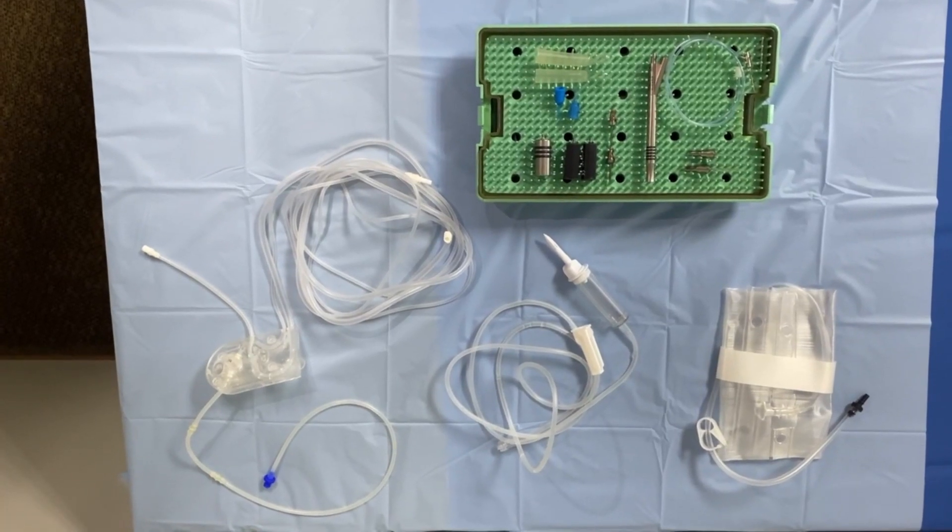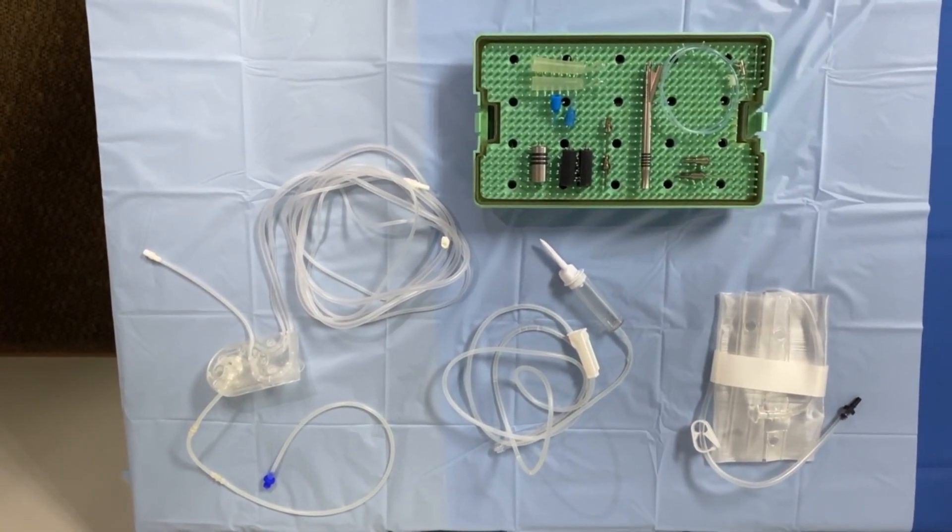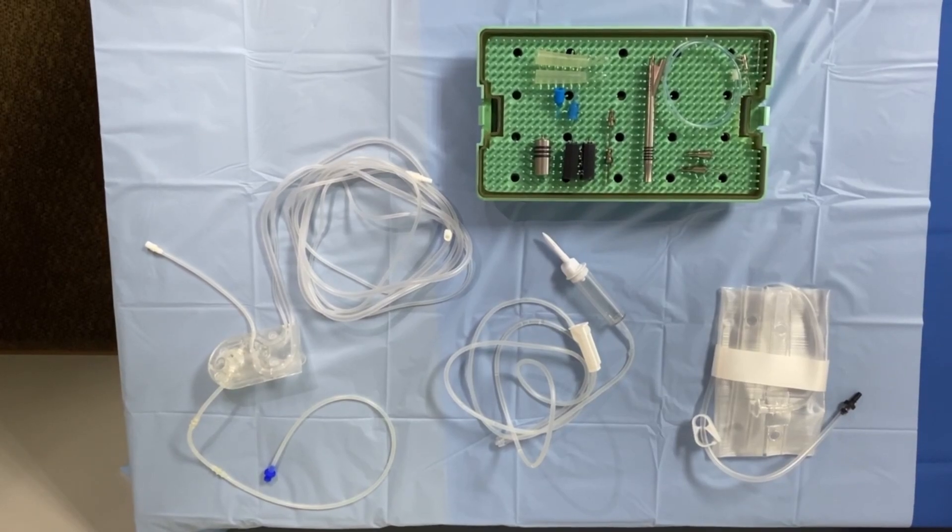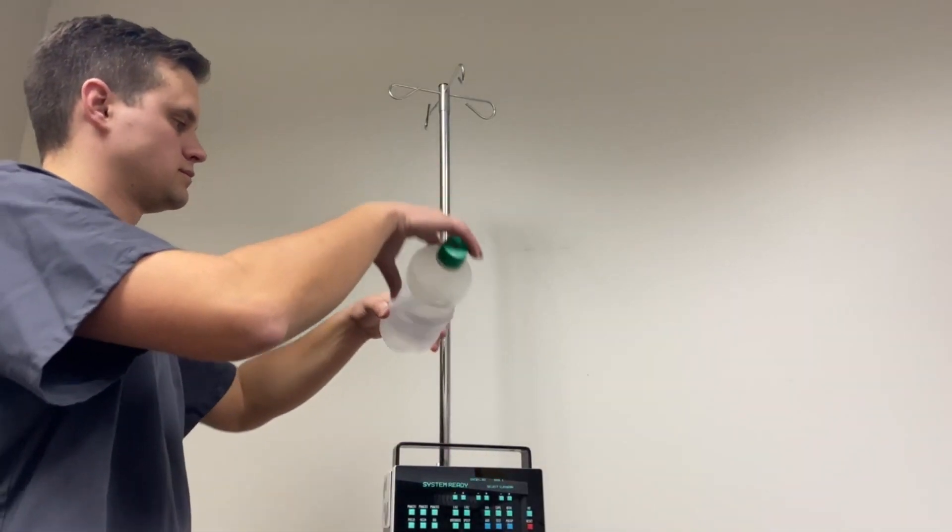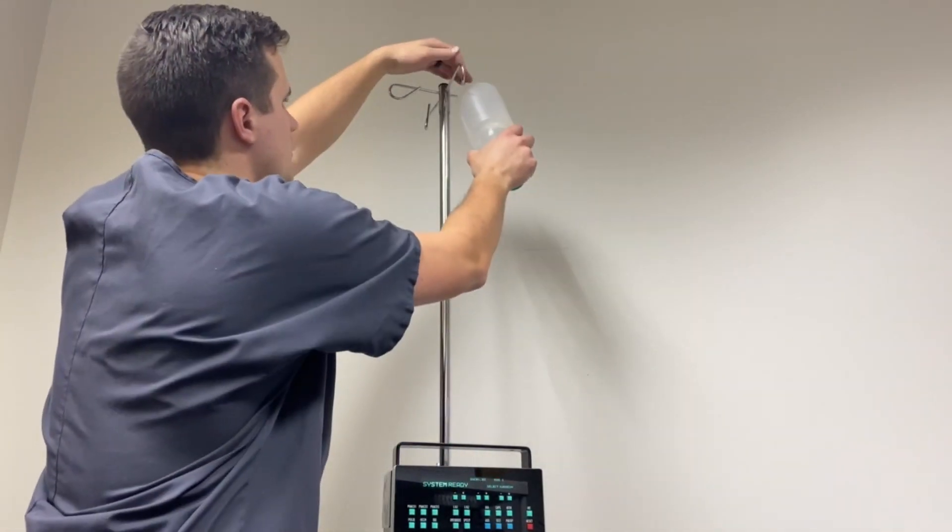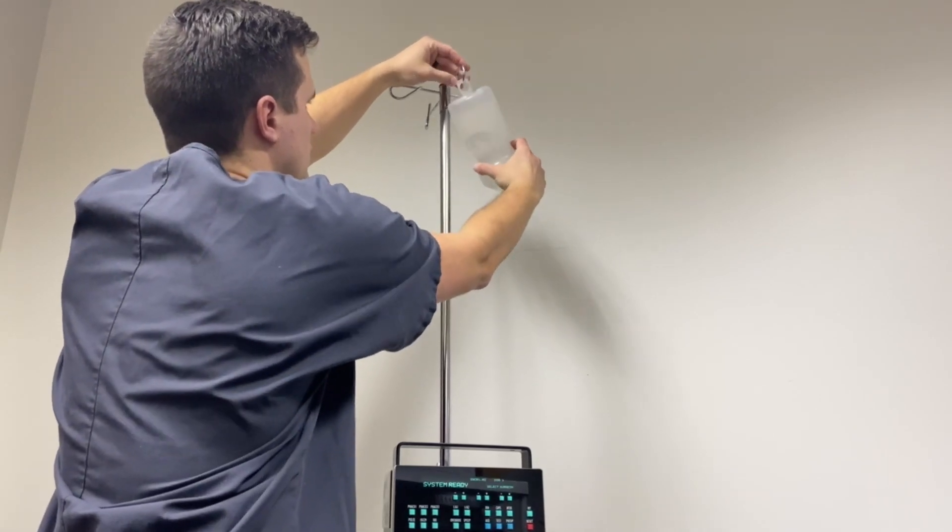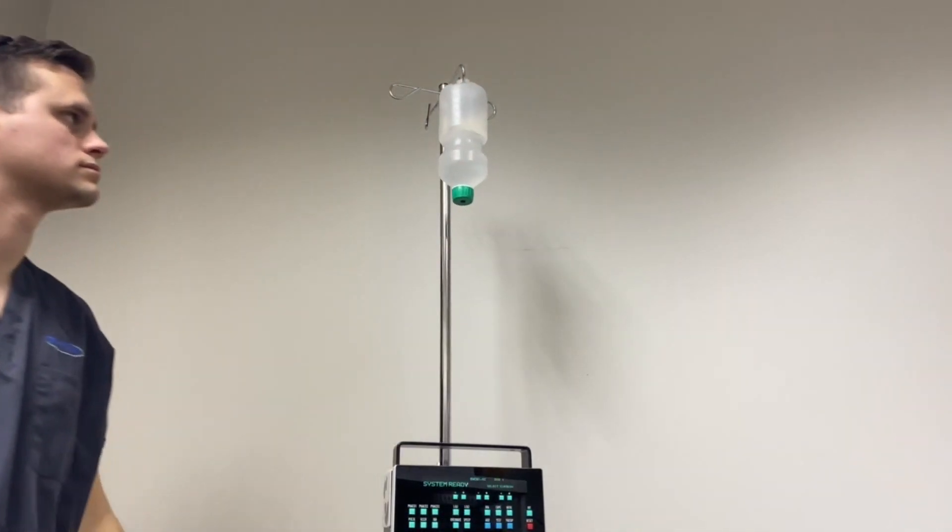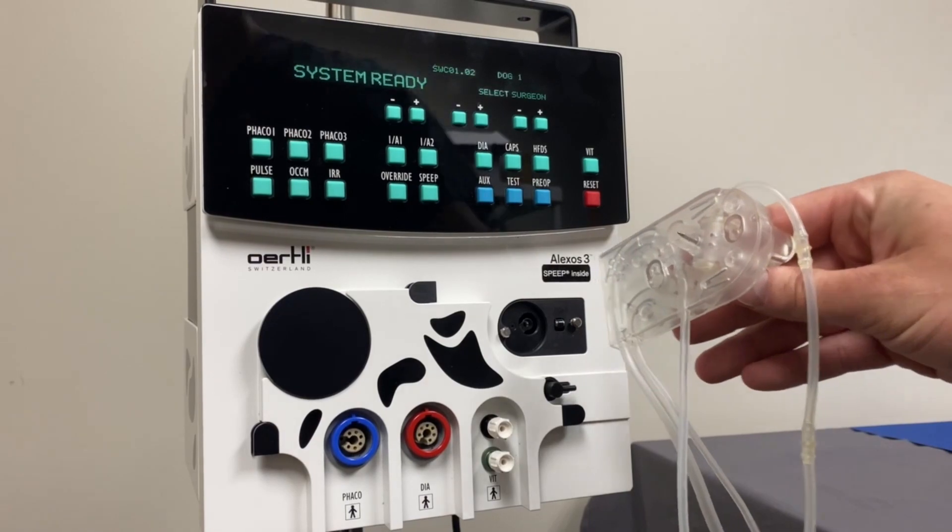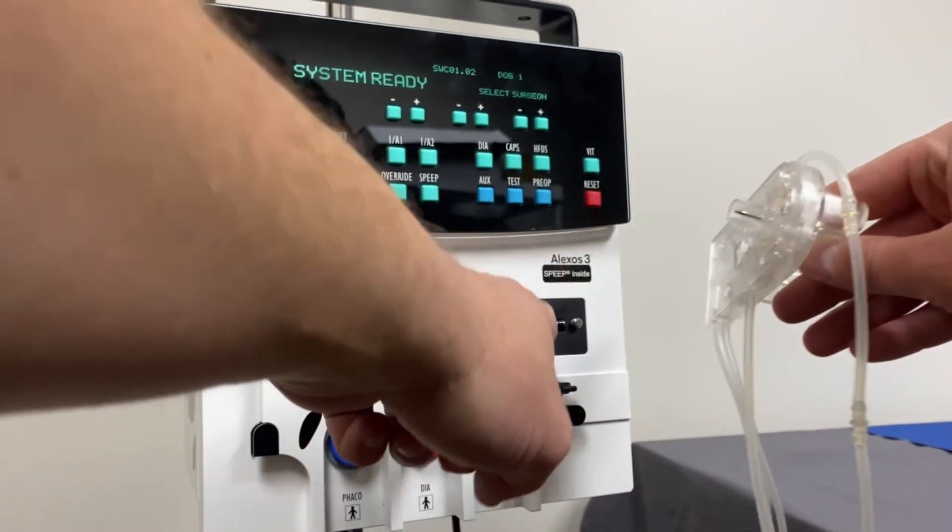Get the handpiece and cassette components ready for setup: FACO tip, sleeve and test chamber, IA cassette with tubing, FACO handpiece. Make sure that the height of the machine is level with the patient's head. Ensure that the BSS bottle or bag is elevated at approximately 100 centimeters above the patient's head. Please pay careful attention to the following step.